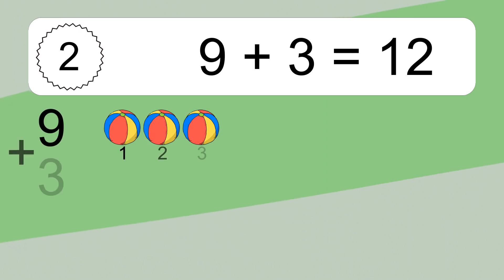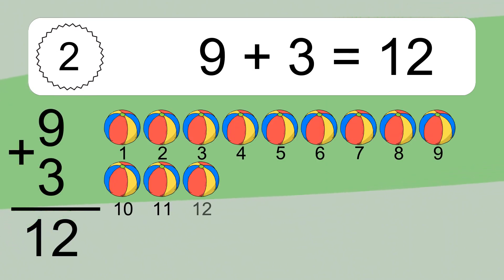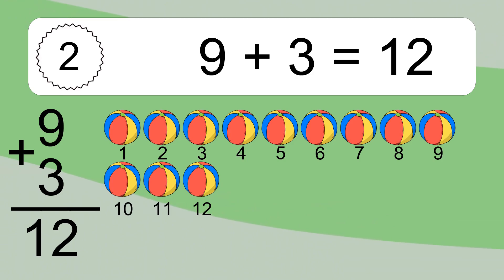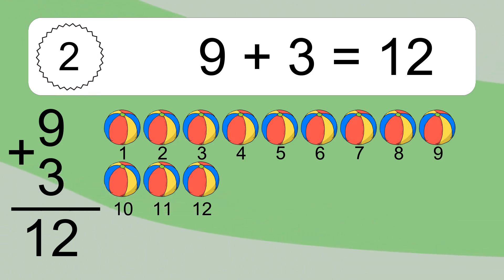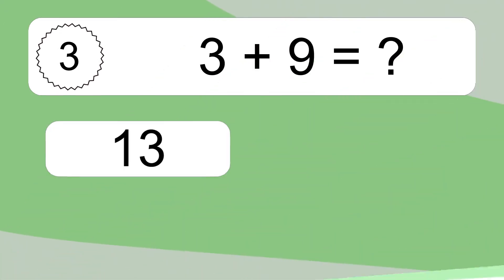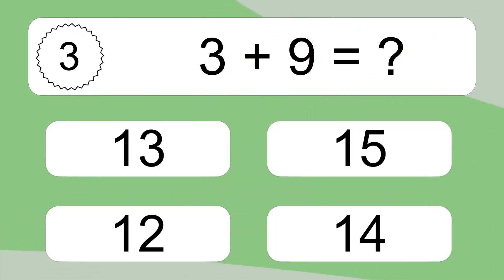9 plus 3 equals what? 9 plus 3 equals 12. Let's count it. 1, 2, 3, 4, 5, 6, 7, 8, 9, 10, 11, 12.